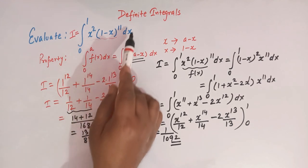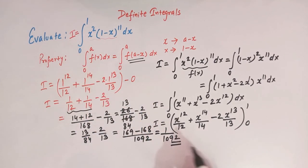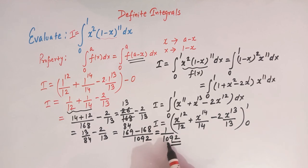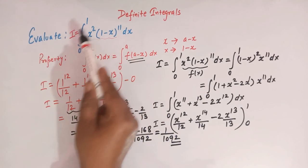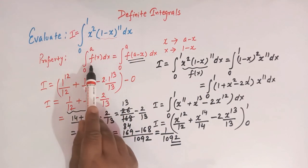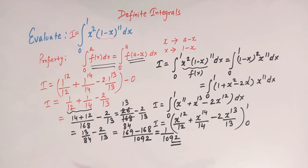So viewers, the value of this definite integral is 1 over 1092. This is how we solve this definite integral using the property of definite integrals.